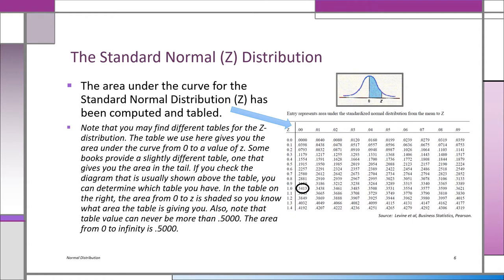Let's look at the standard normal distribution and see how to read this Z table — this is one of the most important things you'll learn. Suppose you want to know how much area you have from 0 to 1. It'll be the same answer for 0 to minus 1 because the distribution is symmetric. Let's do 0 to plus 1.